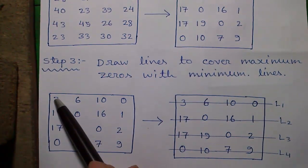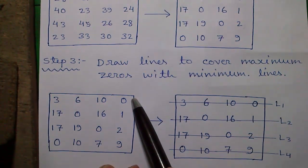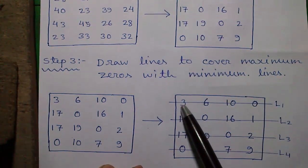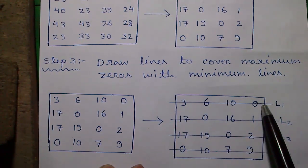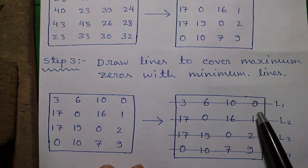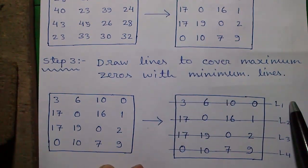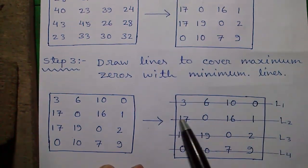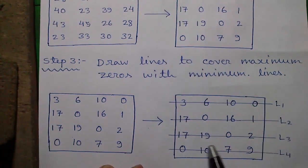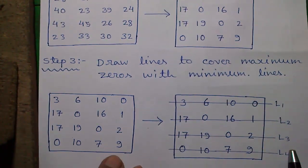Draw our first line to that row or that column which has maximum numbers of 0s. So unfortunately we have exactly one 0 in each row and each column in this question. So we will draw lines arbitrarily. So our first line or L1 is drawn in row 1, L2 in row 2, L3 in row 3 and L4 in row 4.